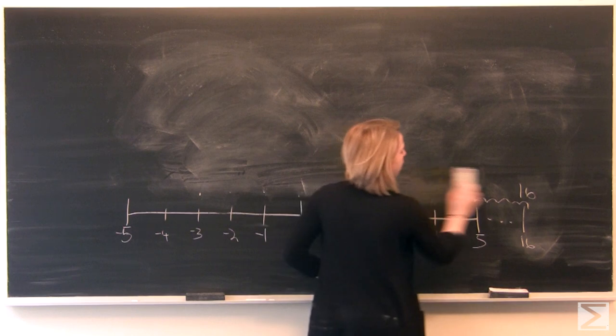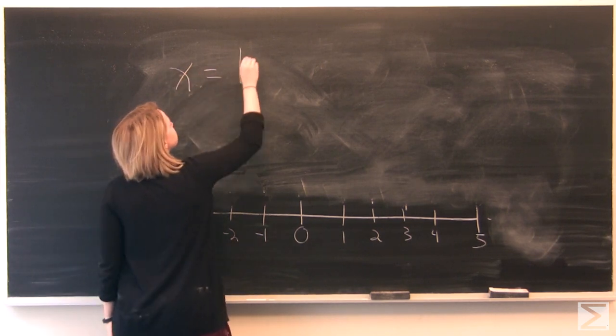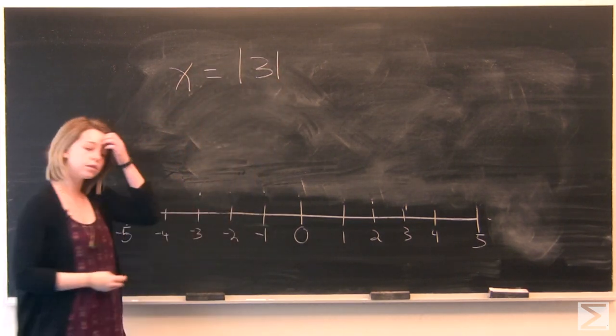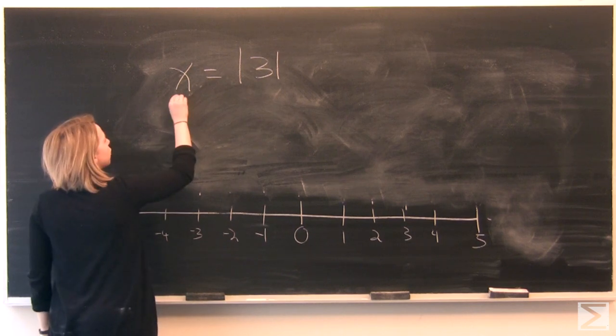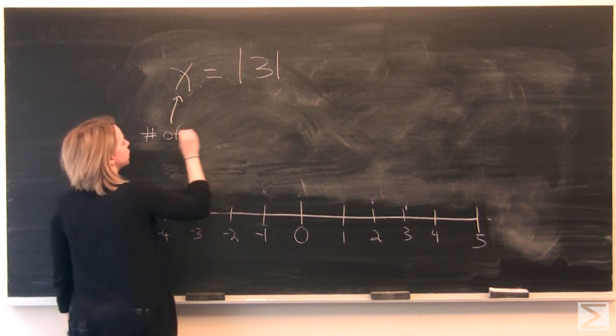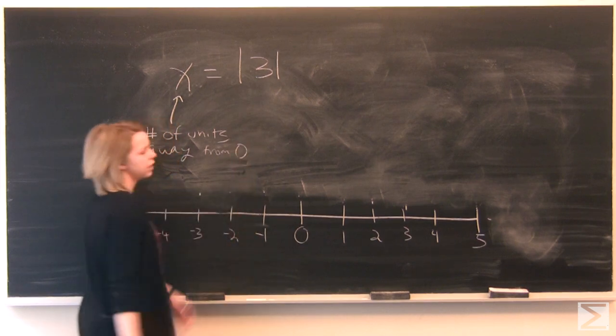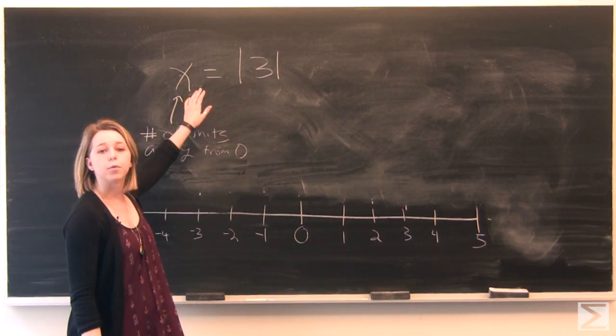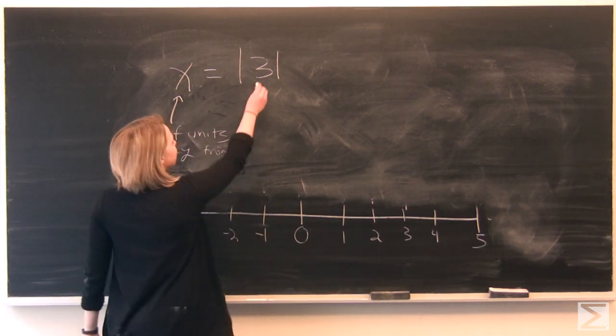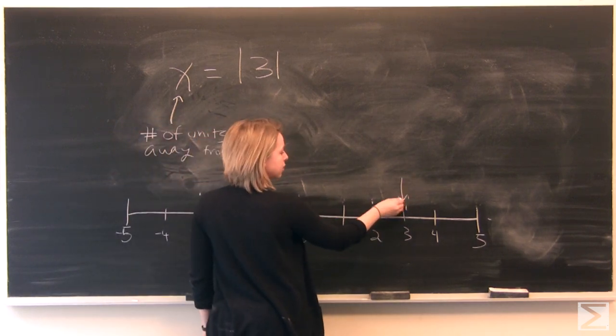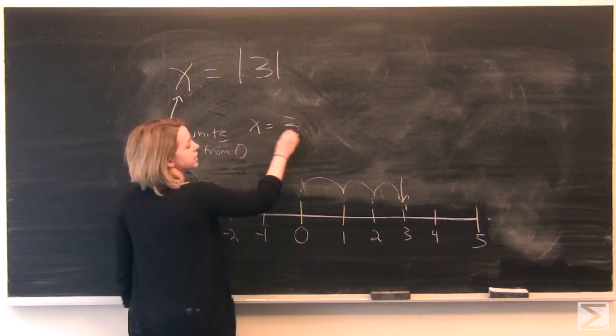We can see absolute values written in another way, like in the case of x equals the absolute value of 3. In this case, our variable is going to be the number of units away from 0. In our previous example, our variable was not the number of units. So in this case, we've got 3, and we know if we count backwards, that's 1, 2, 3 units away from 0. So in this case, x is simply equal to 3.